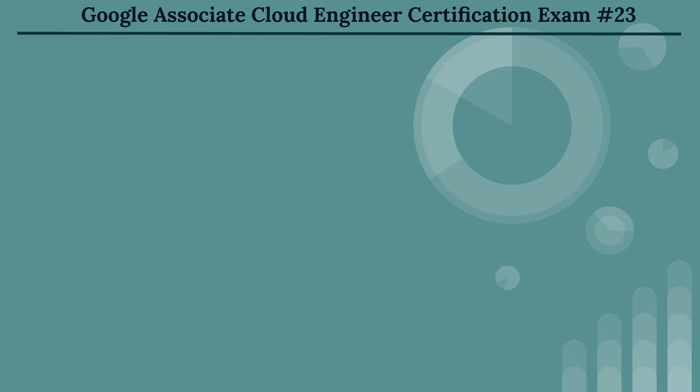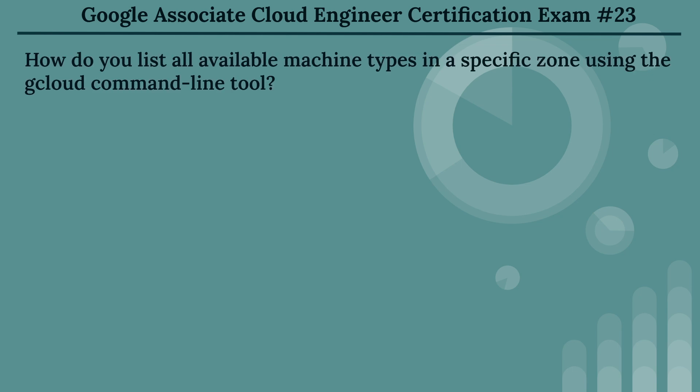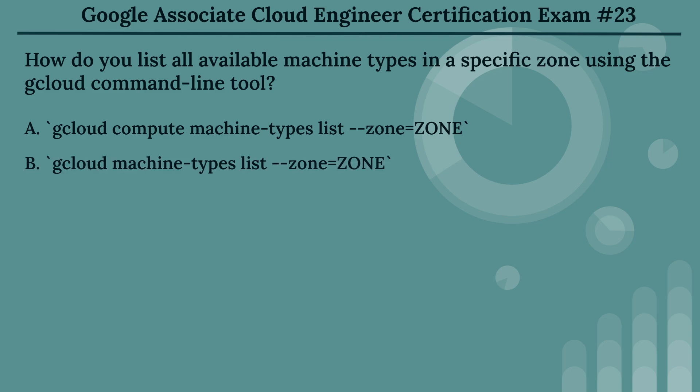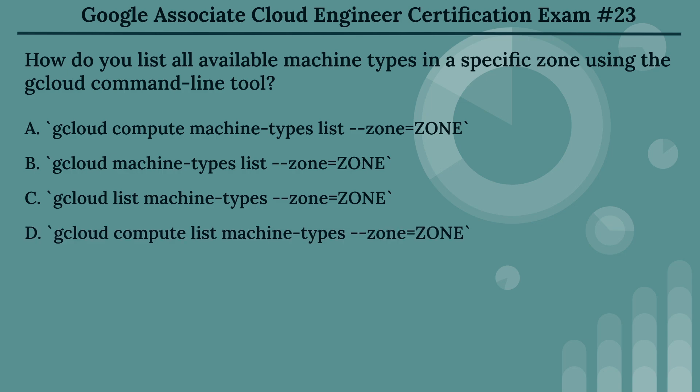The twenty-third question: how do you list all available machine types in a specific zone using the cloud command line tool? The options are: Option A, gcloud compute machine-types list --zone=ZONE. Option B, gcloud machine-types list --zone=ZONE. Option C, gcloud list machine-types --zone=ZONE. Option D, gcloud compute list machine-types --zone=ZONE.